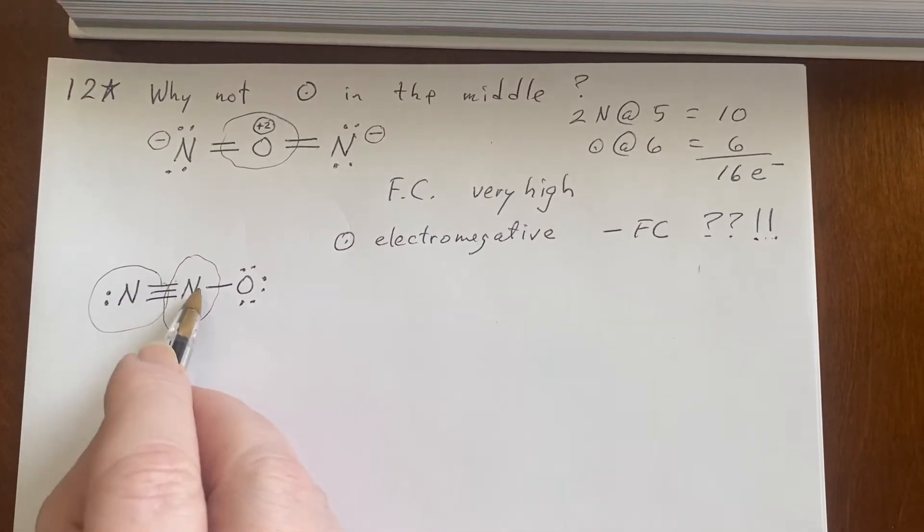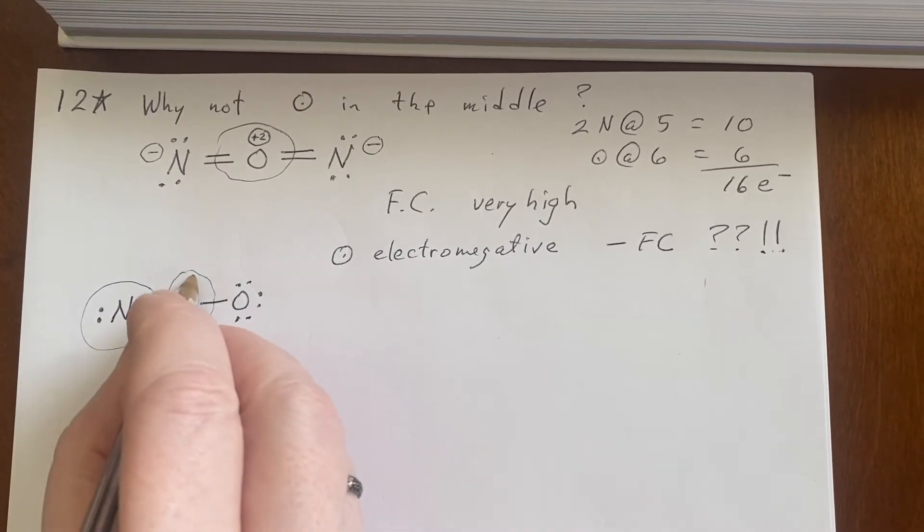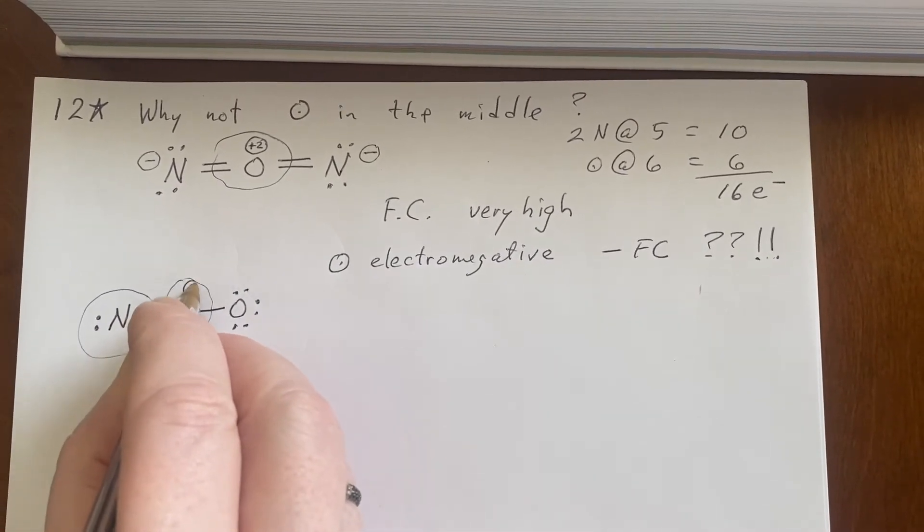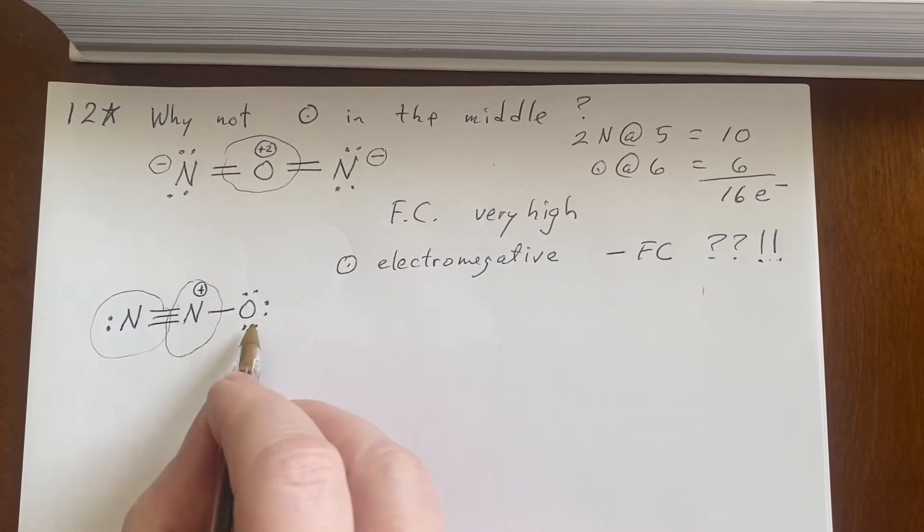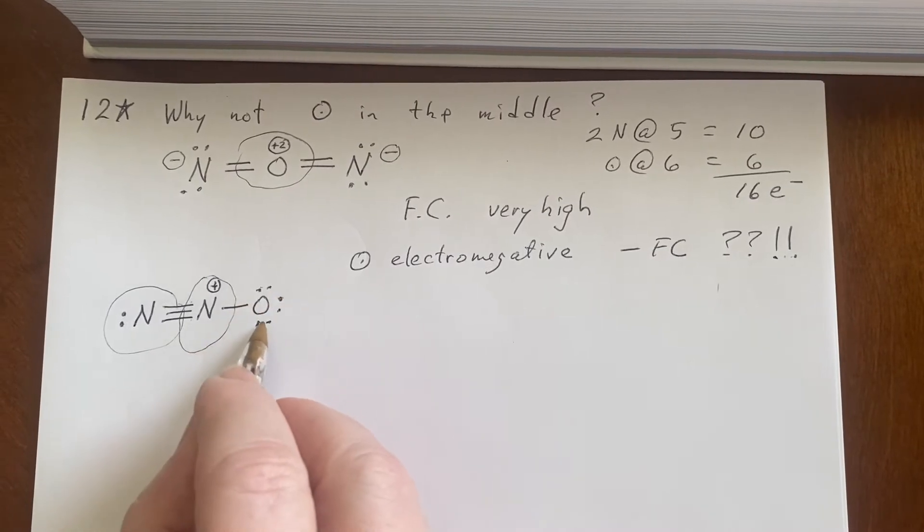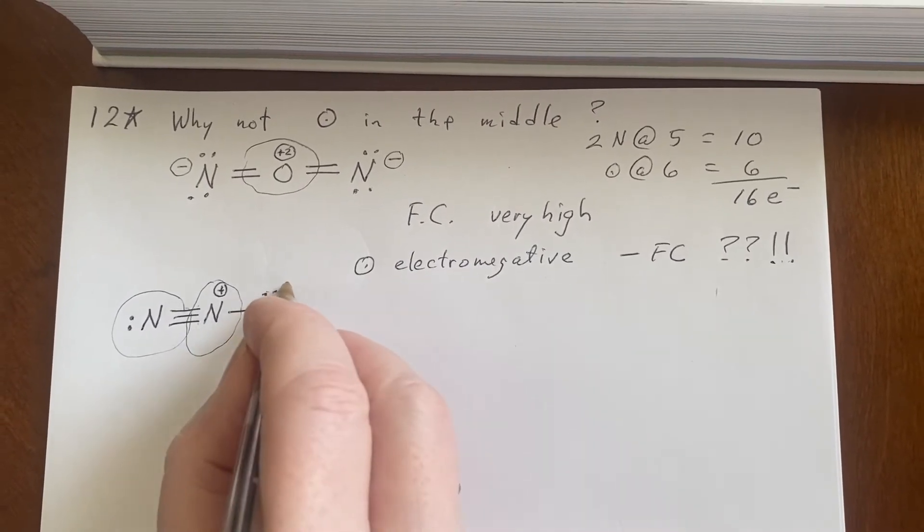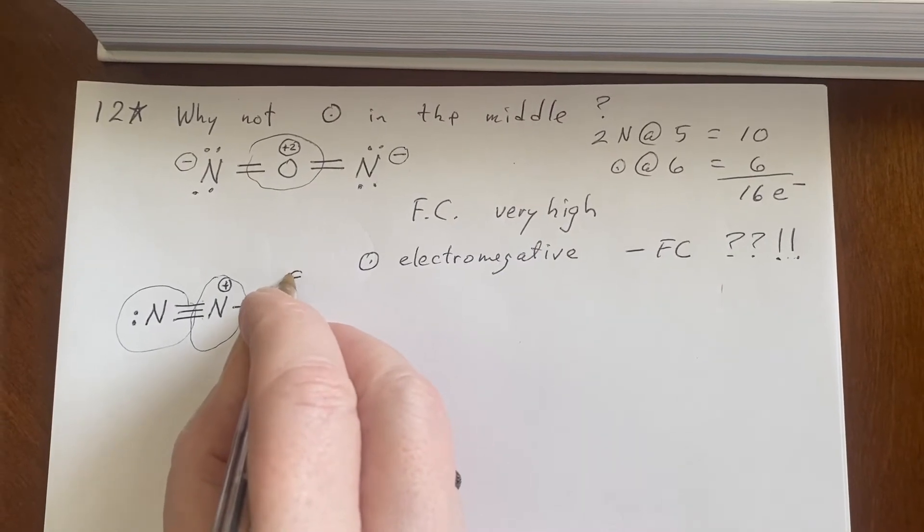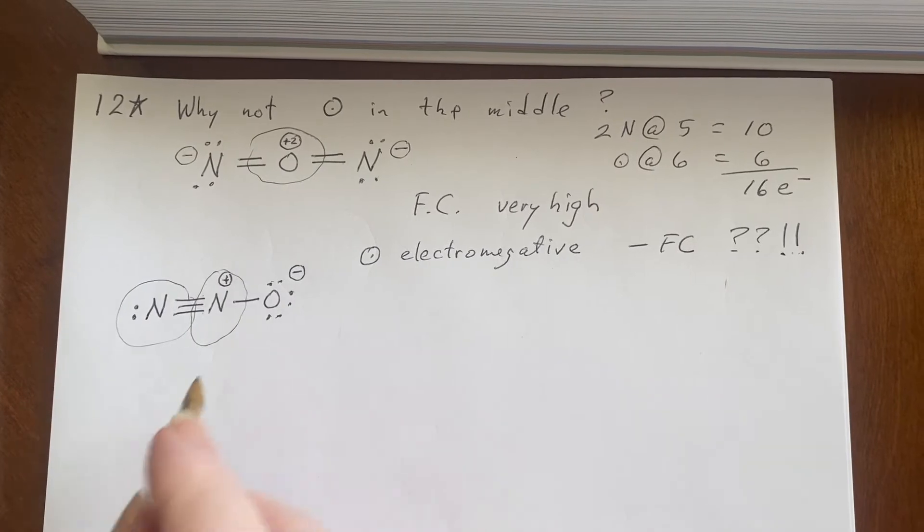One, two, three, four. So it has a formal charge of plus one because it came with five, but now it only has four. And this one, one, two, three, four, five, six, seven. It now has seven electrons when it came in with six electrons. So there we have how that one works out.